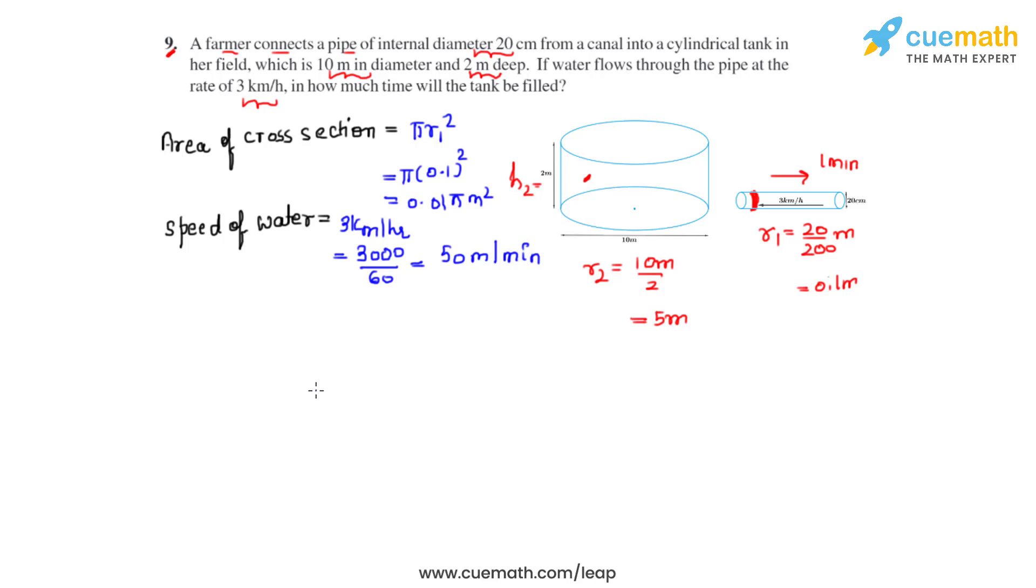Now we can find the volume of water that flows through the pipe in one minute. That will be the area of cross section multiplied with the speed of water. So that will be 0.01π times 50, and we get the answer as 0.5π meter cube.